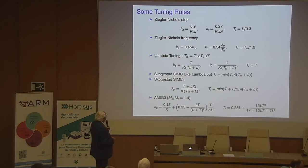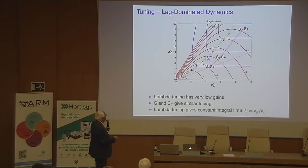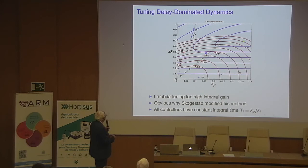Here are some tuning rules — our rule and Skogestad's rules. Plotting what the rules look like in the diagrams, you can see that Skogestad's rules have a little too high proportional gain for lag-dominated dynamics. For balanced dynamics, Skogestad's rules give slightly too low gain. There's also something called lambda tuning which is not good. These diagrams are good for comparing control laws — they show clearly why Skogestad changed his first rule to get better performance.